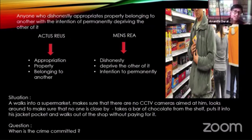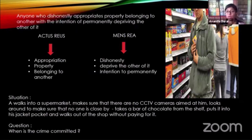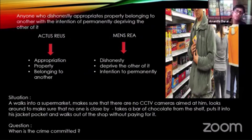In theory, when did he commit it? When he put it into his jacket pocket. This is what we study in the theory of criminal law. In an exam, the examiner will describe the scenario and ask: the student is required to tell the examiner that because the actus reus and mens rea are made out at that point — when he put the chocolate into his jacket pocket — the offence is made out. That's the difference between theory and practice.